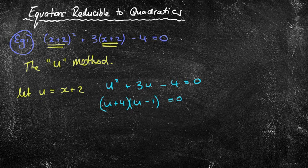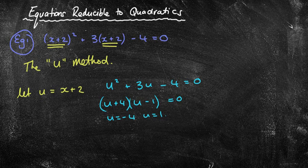Which gives me u = -4, u = 1. Now the danger of using this method, however, is to stop there. The reason why I'm saying it's a danger is because the equation has x in it, not u. So we need to solve for x.